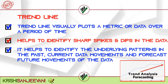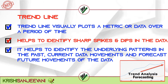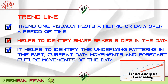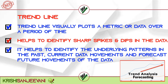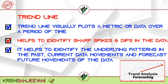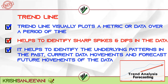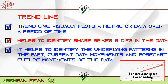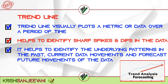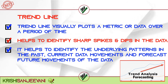A trend line visually plots a metric or data over a period of time, helps to identify sharp spikes and dips in the data, and helps to identify the underlying patterns in past and current data movements and forecast future movements. This video covers both single X value trend analysis and forecasting, and multiple X value trend analysis and forecasting.